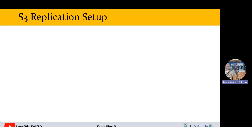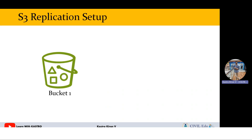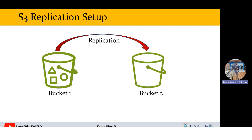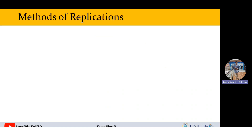Let us understand the replication concept with a simple scenario. Say I have one S3 bucket called bucket one, and I upload some objects into it. Whenever I upload objects into bucket one, duplicates of those objects should automatically get replicated into another bucket called bucket two. This is what we are going to do in the replication setup.